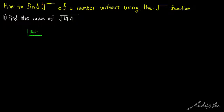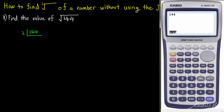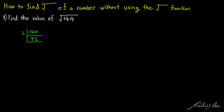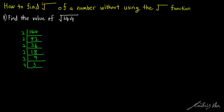So 144 we can divide by 2, and in this step we can actually use our calculator. 144 divided by 2 we get 72. 72 divided by 2 gives us 36. 36 divided by 2 gives us 18. 18 divided by 2 gives us 9. When we get 9, we need to move on to the next prime number which is 3. 9 divided by 3 gives us 3, and 3 divided by 3 gives us 1. So we can agree that 144 is equal to 2 to the power of 4 times 3 to the power of 2.